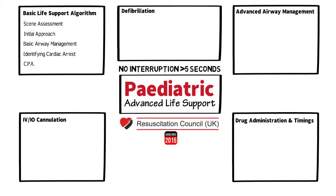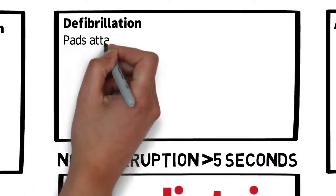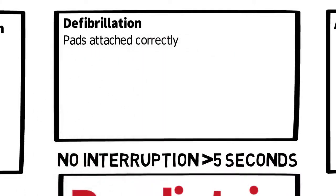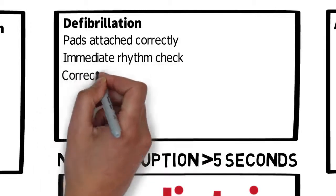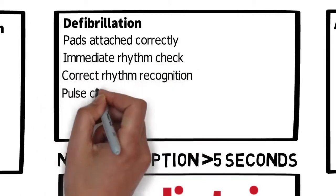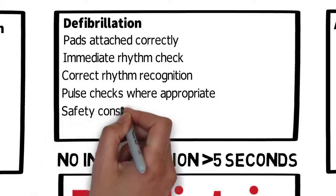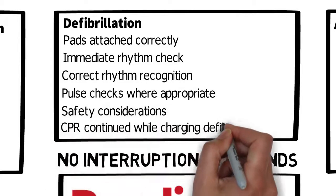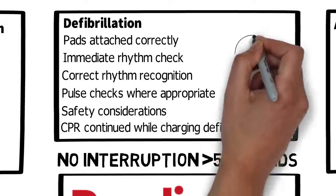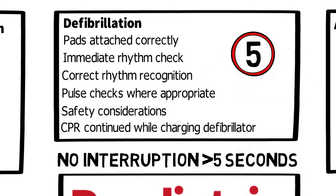For defibrillation we're going to look specifically at correct pad attachment, an immediate rhythm check, correct rhythm recognition, pulse checks where appropriate, safety considerations, and that CPR is continued while charging the Zoll. Again, there should be no interruption of longer than five seconds of CPR.